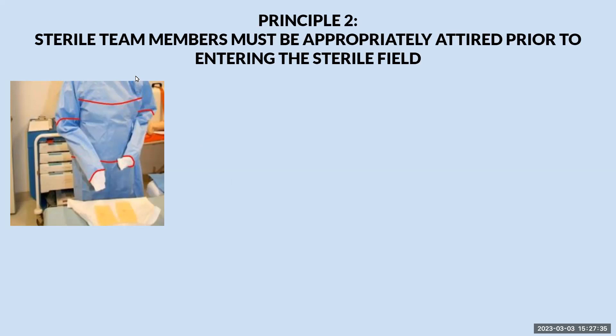The gown sleeves up to two inches above the elbow are considered sterile — this whole section here. Remember, your white cuffs are not sterile. The back is unsterile. When wearing a sterile gown, the non-sterile back should not be turned towards the operative field or the back table. You have to be very cautious when turning to grab instruments that you're not putting your back towards any of the sterile field.